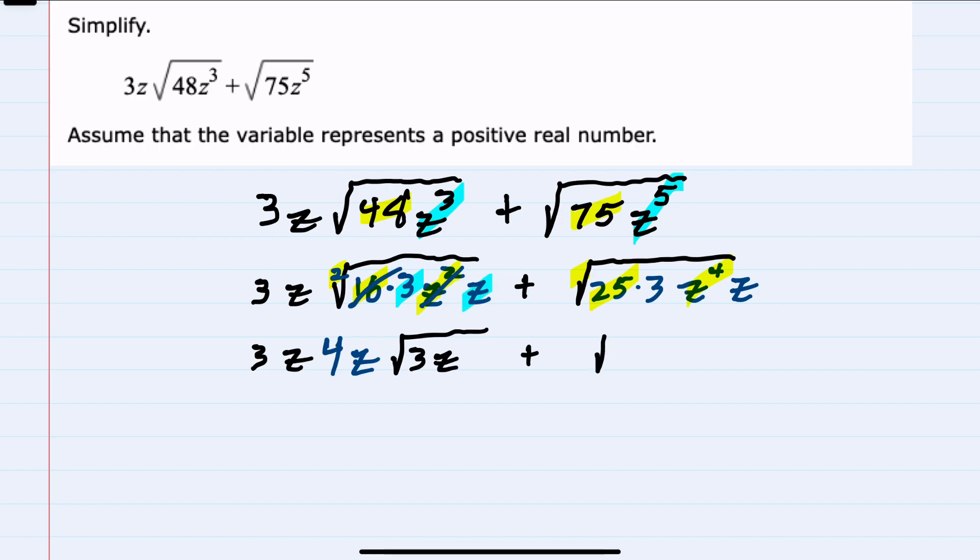For the second radical, I can bring out the 25—square root of 25 is 5. And the z⁴ comes outside as a z². Here I'm dividing that degree of 4 by the 2 because it's a square root, leaving me with a 3 and a z under the radical.